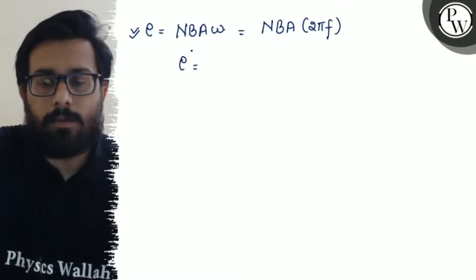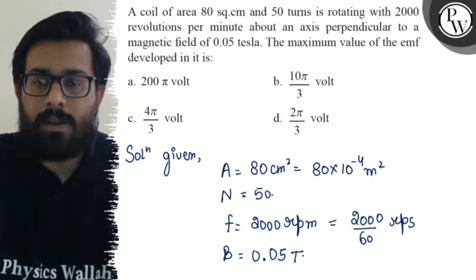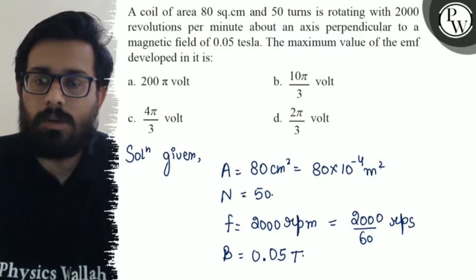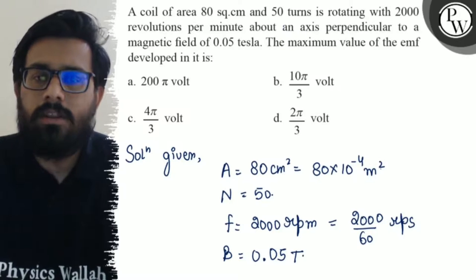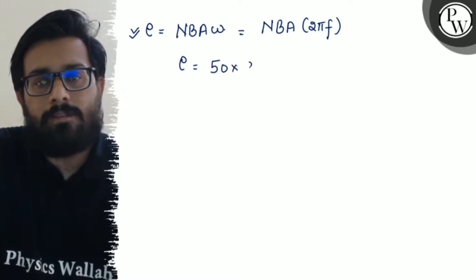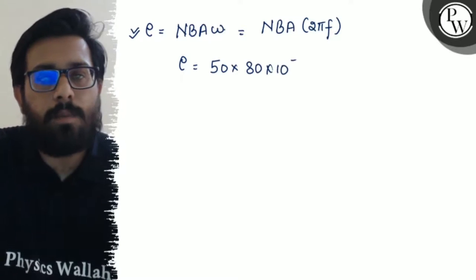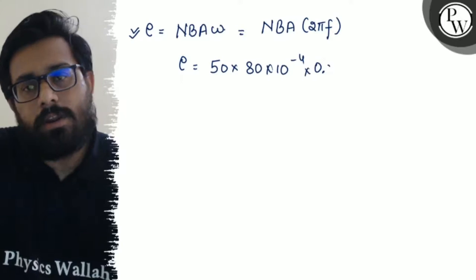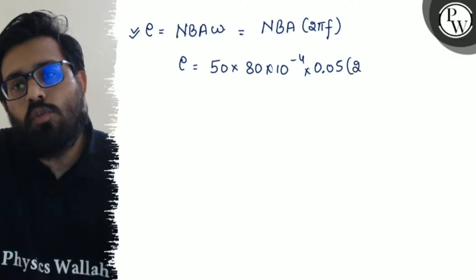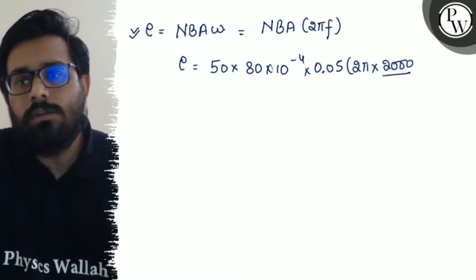So E can be written as number of turns is 50, area is 80 × 10⁻⁴, frequency is 2000/60, and the magnetic field is 0.05. So putting the values: number of turns is 50, area is 80 × 10⁻⁴, magnetic field is 0.05, and 2π frequency is 2000/60.